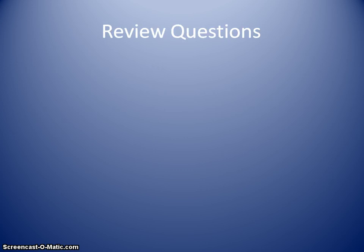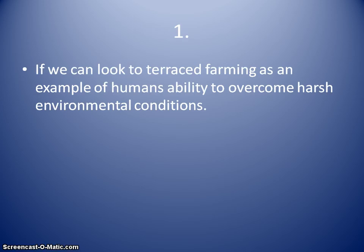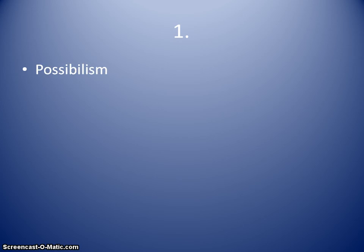Now we're going to look at some review questions. I'm going to make some statements, and you decide whether they would be from an environmental determinist perspective, a cultural determinist perspective, or a possibilist perspective. Look at the question, pause it for a second, see if you can answer it, and then I'll reveal the answer. Statement one: we can look to terrace farming as an example of humans' ability to overcome harsh environmental conditions. Terrace farming is used in very steep terrain but allows people to still farm — used in the Andes Mountains with the Inca Empire and in Southeast Asia even still today. That is going to be from a possibilist perspective.